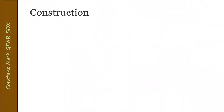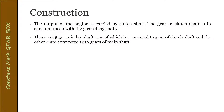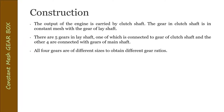The construction of the constant mesh gearbox: the output of the engine is carried by the clutch shaft. The gear on the clutch shaft is in constant mesh with the gear of the lay shaft. There are five gears in the lay shaft — one connected to the clutch shaft gear and the other four connected with gears of the main shaft. All four gears are of different sizes to obtain different gear ratios: first gear gives maximum torque and minimum speed, and progressively each higher gear gives more speed and less torque.